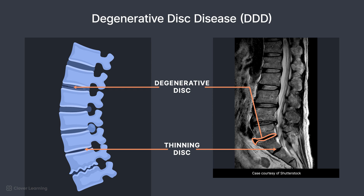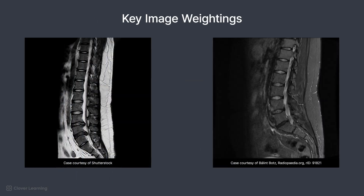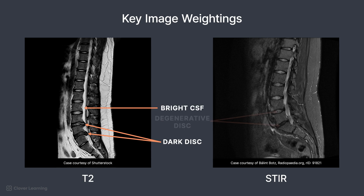A secondary pathology to thinning discs — resulting in the vertebral end plates rubbing against each other — is osteophyte formation, or bone spurs. These will cause the end plates to have a rippling appearance rather than a flat appearance. A key image weighting for disc pathologies is a T2-weighted image or a STIR image. This demonstrates the bulging disc as dark compared to the bright CSF fluid. For degenerating discs, the signal is reduced in the center as compared to healthy discs.